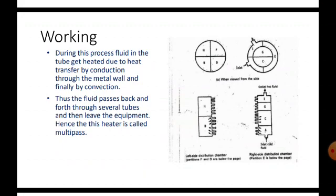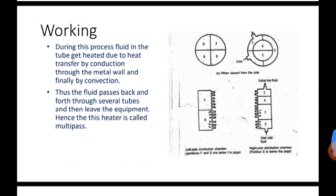Next point in working is: during this process, fluid in the tube get heated due to heat transfer by conduction through the metal wall and finally by convection. The liquid in the tubes get heated due to conduction and then finally by convection. Thus, the fluid passes back and forth through the several tubes and then leave the equipment, hence this heater is called as multipass. Fluid in the tubes move back and forth into several tubes and then leave the equipment, hence it is called as multipass heater.